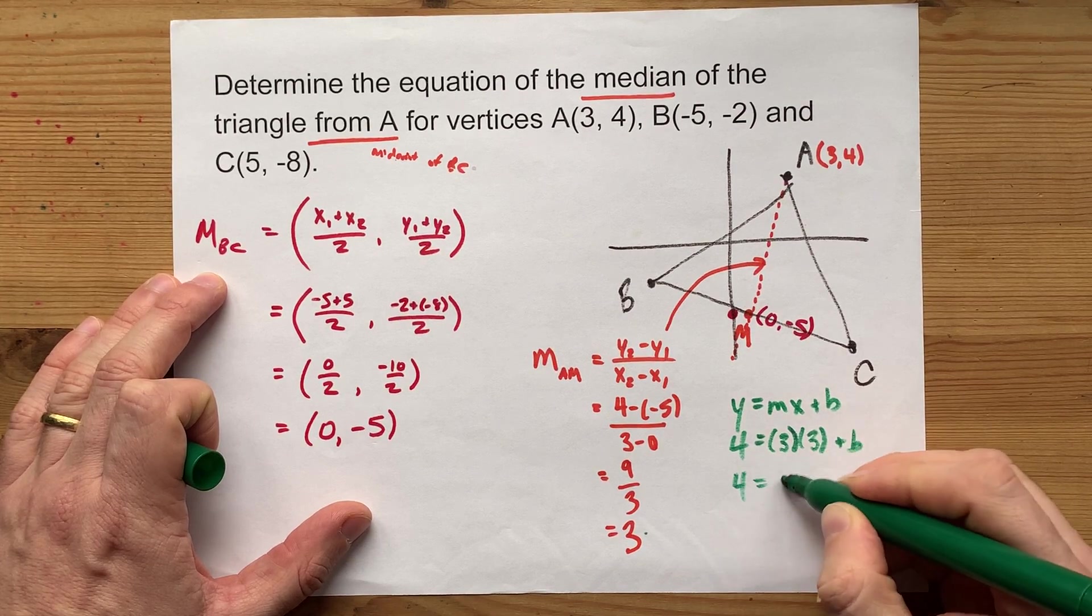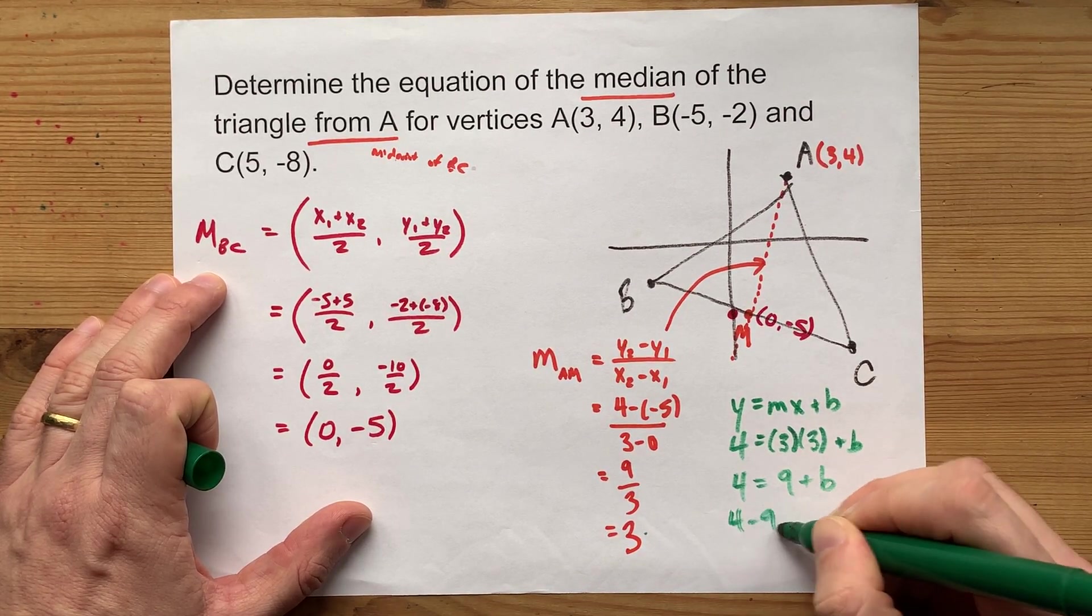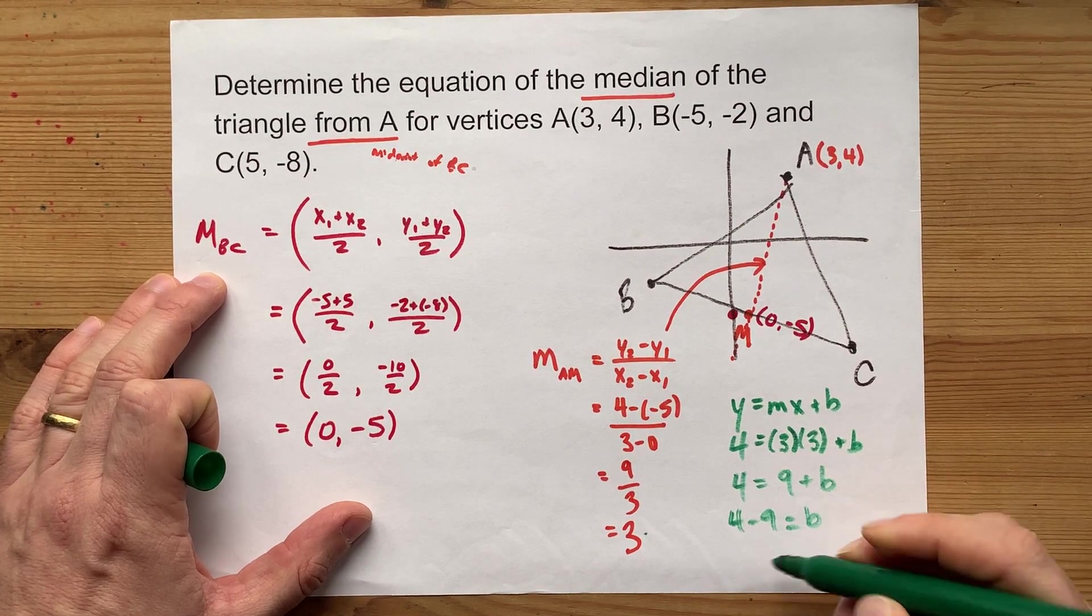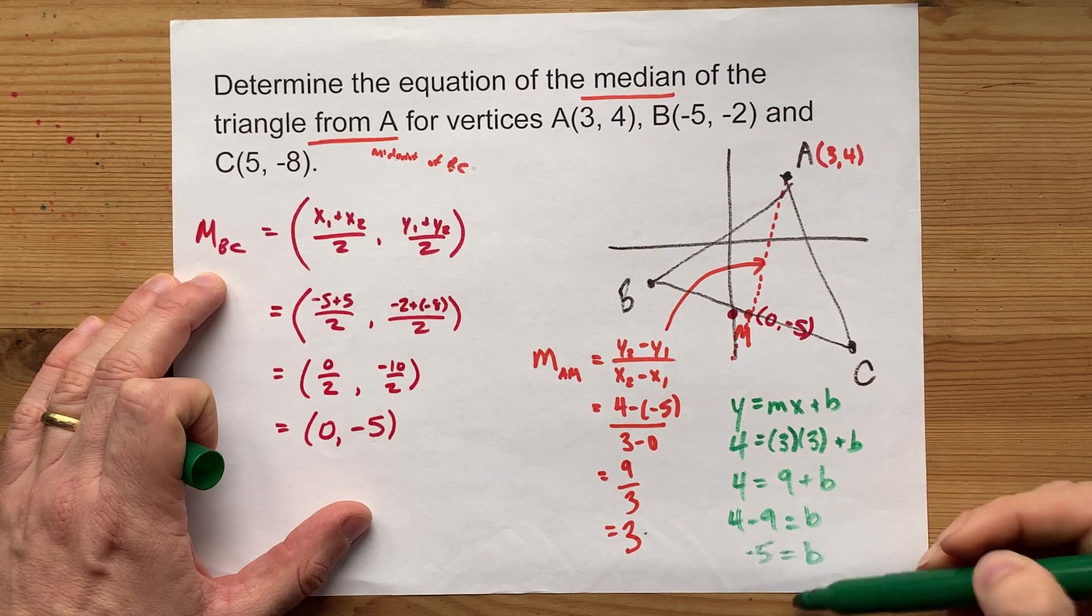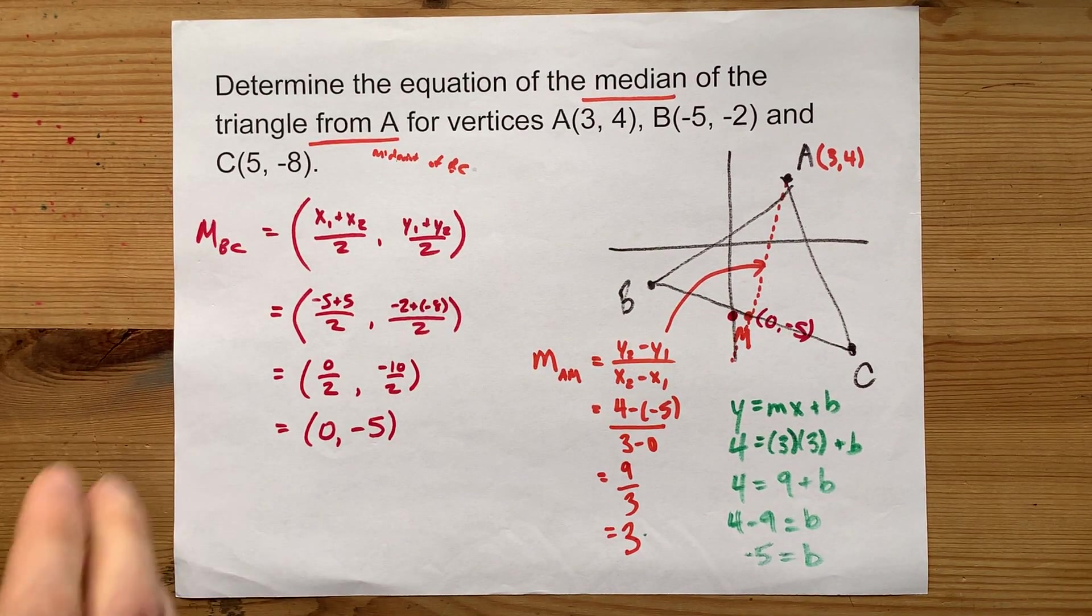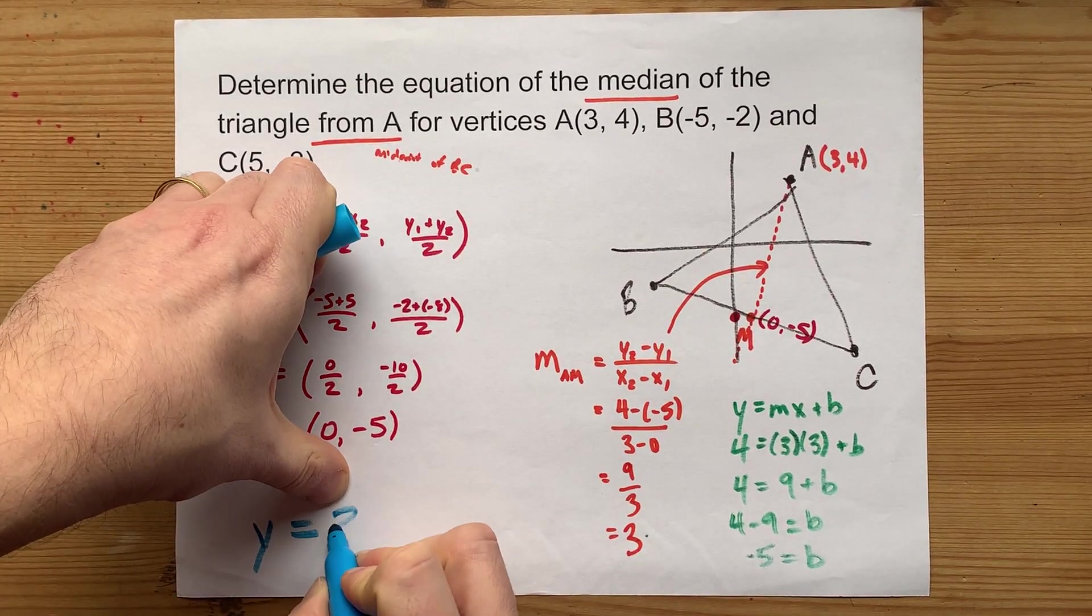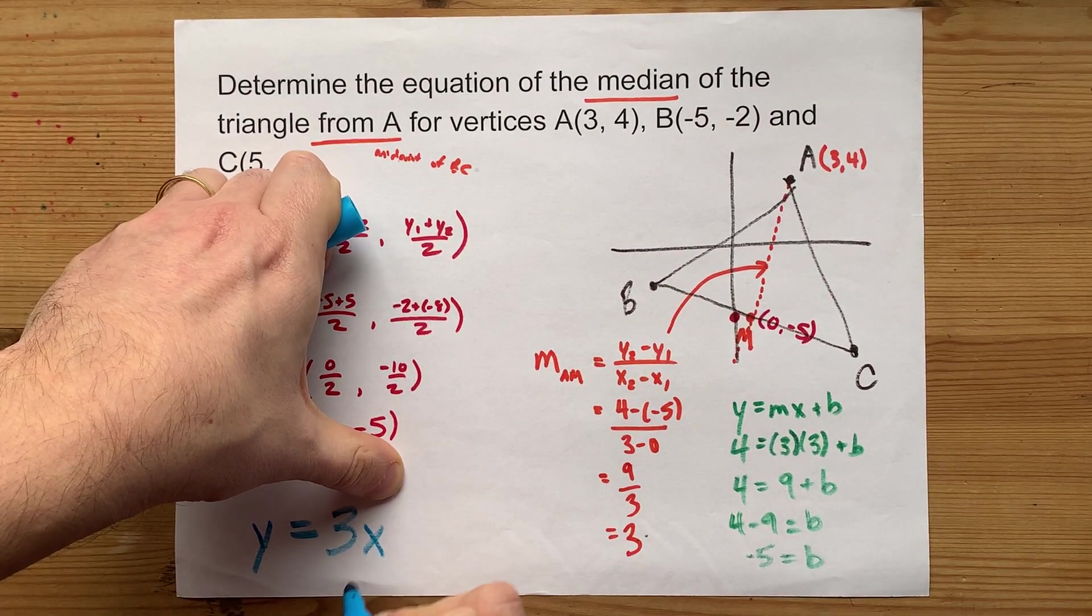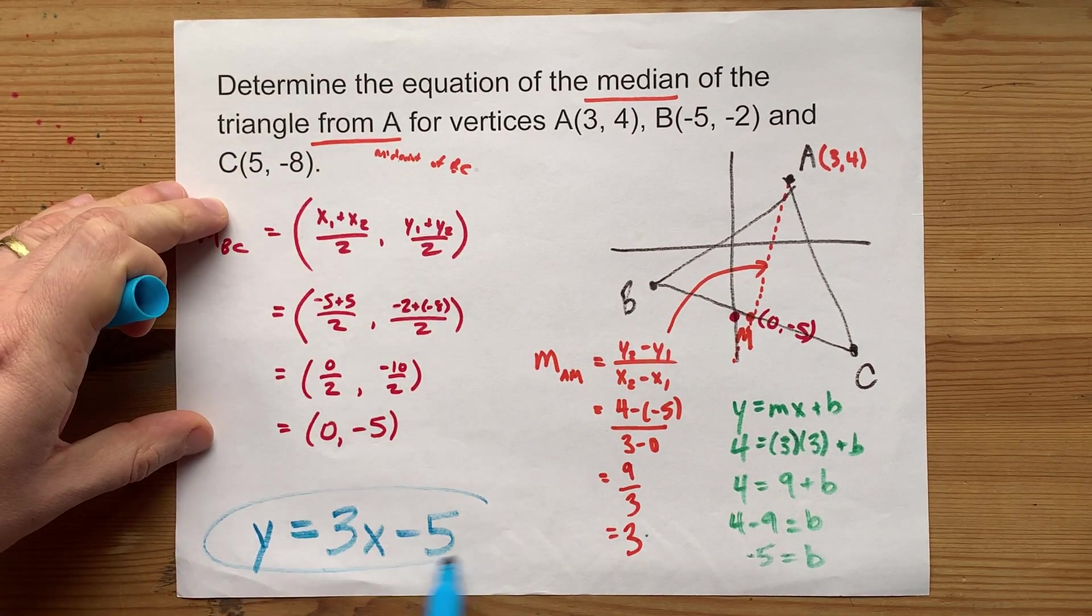So I got 4 equals 9 plus b. I can move the 9 to the other side, make it subtraction. That's negative 5 equals b. And so I've got my slope and my y-intercept. That means the equation is y equals slope times x plus b, which is negative 5. That's the equation of my median.